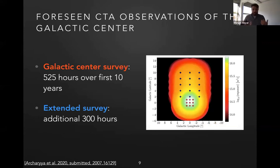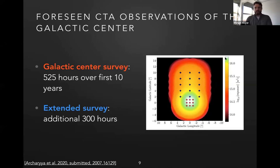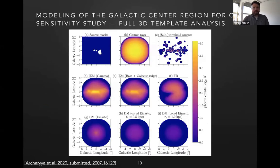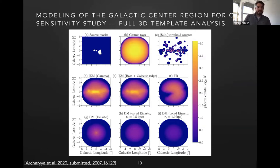So what will CTA be able to do? It is planned that CTA will conduct a survey of the inner galaxy consisting of more than 500 hours spread over the first 10 years of observations. The pointing positions are depicted in red in galactic coordinates — nine pointings centered on the galactic center — and the color code shows the exposure foreseen. Exposure is essentially the observation time multiplied by the effective area of the telescope. Additionally, an extended survey is planned covering higher latitudes with additional 300 hours, though the sensitivity I'll show focuses on the 500-hour central galaxy survey.